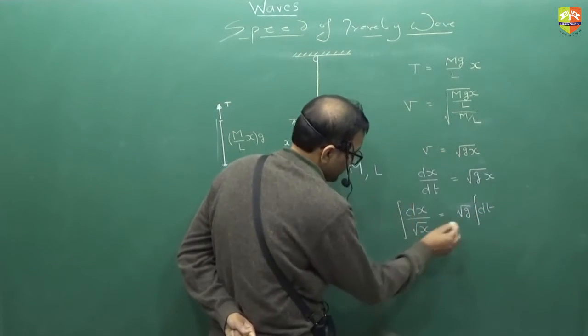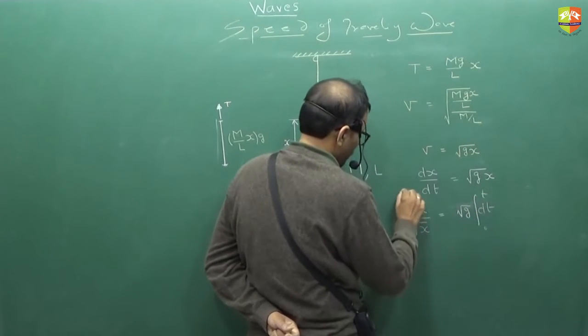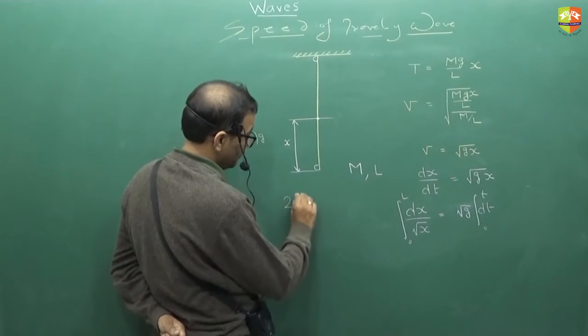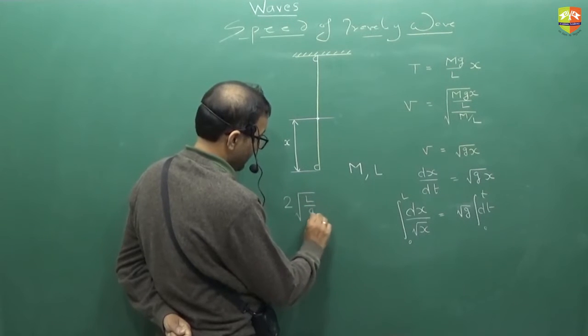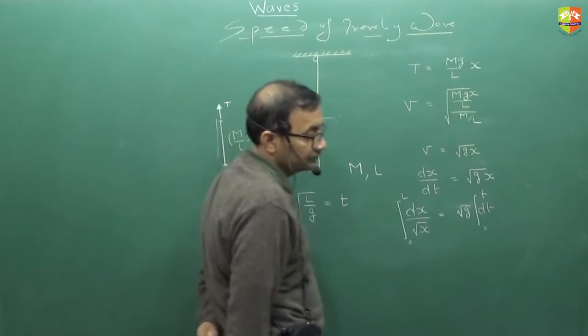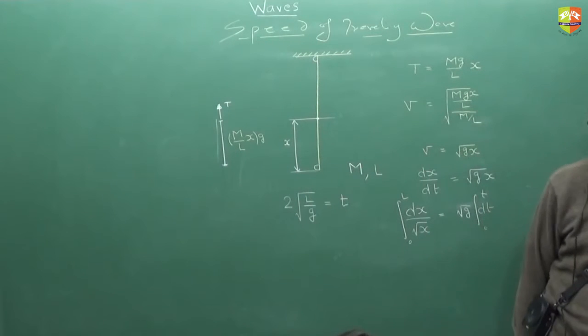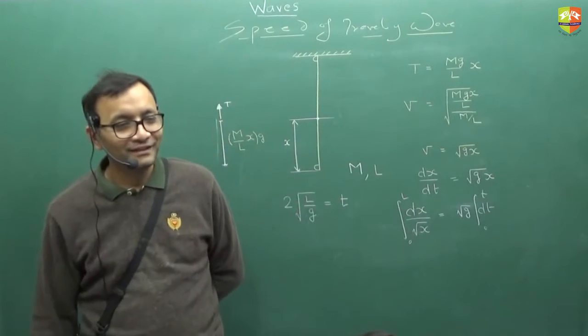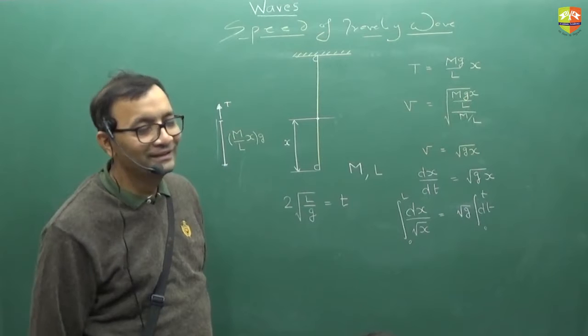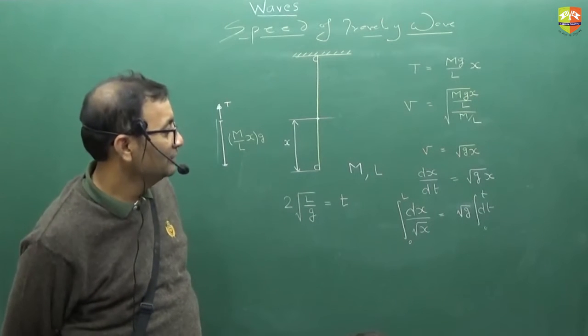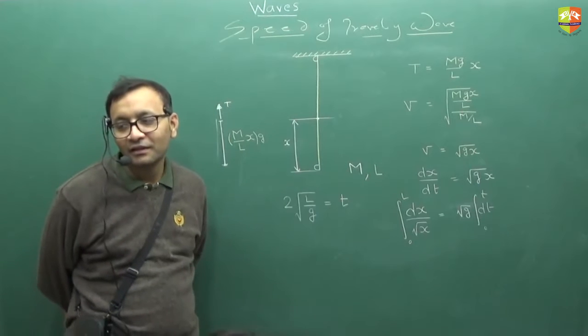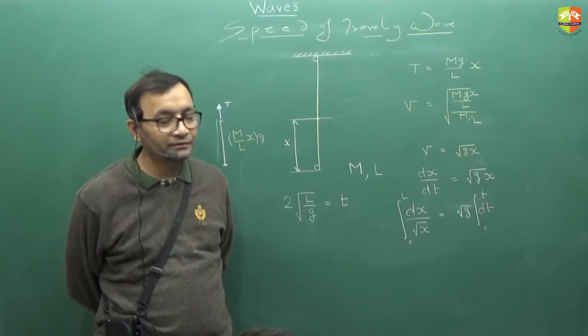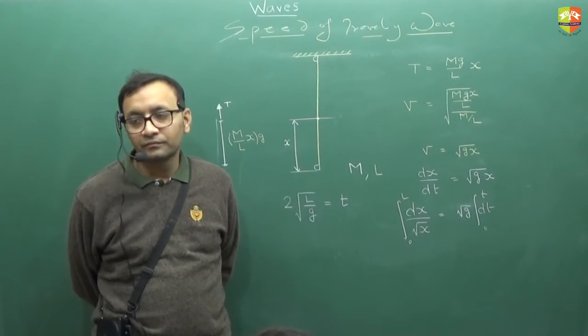You will integrate this. 0 to t, 0 to l. T will come out to be how much? 2 into root of l divided by... I have got 2g in root. Whether you got the wrong answer also it is fine but method should be correct. Any doubt? This came in JEE Advanced a couple of years back. Ok?